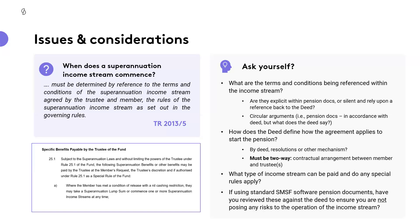Most importantly, it must be a two-way contractual agreement between the member and the trustee. We cannot simply have a resolution by the trustee that says the pension started. There must be three pieces of information: one is a member's request to commence the pension, two would be resolutions by the trustee determining that pension is to commence, and then notification back to the member from the trustee confirming the particulars of that income stream, with the member ultimately signing off on acceptance of those terms.